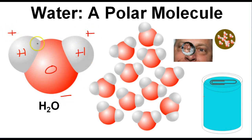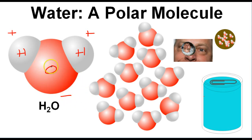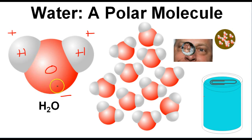The hydrogen side of a water molecule is going to be slightly more positive and the oxygen side of a water molecule is going to be slightly more negative. This tends to happen because oxygen is a little bit more electronegative than hydrogen, and therefore the shared electrons between the hydrogen and oxygen are spending most of their time on the oxygen end of the molecule.